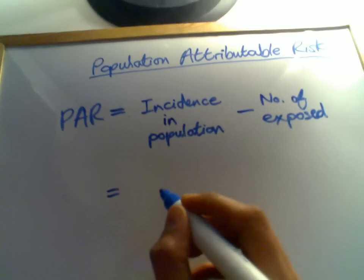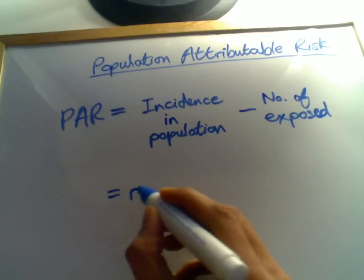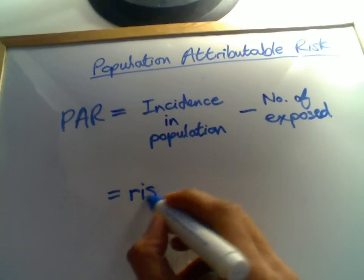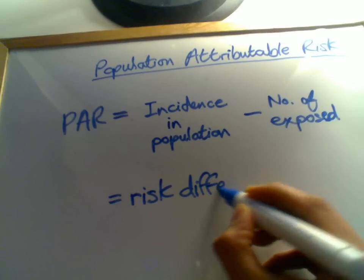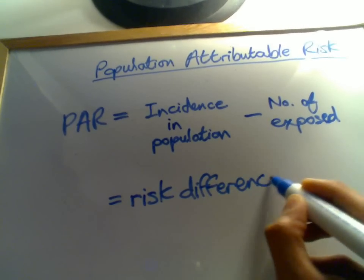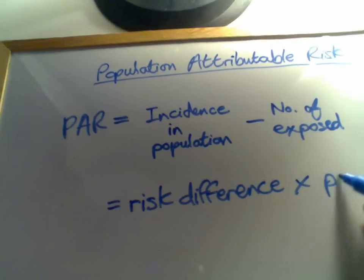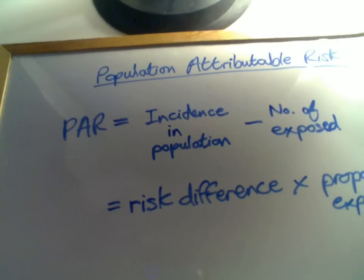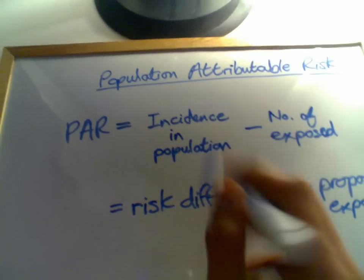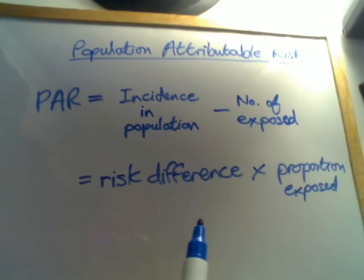There's also another way of working it out which is a bit more difficult to understand. And that's risk difference, which we've covered in a previous video, times proportion exposed. So these are the two ways of working out population attributable risk.